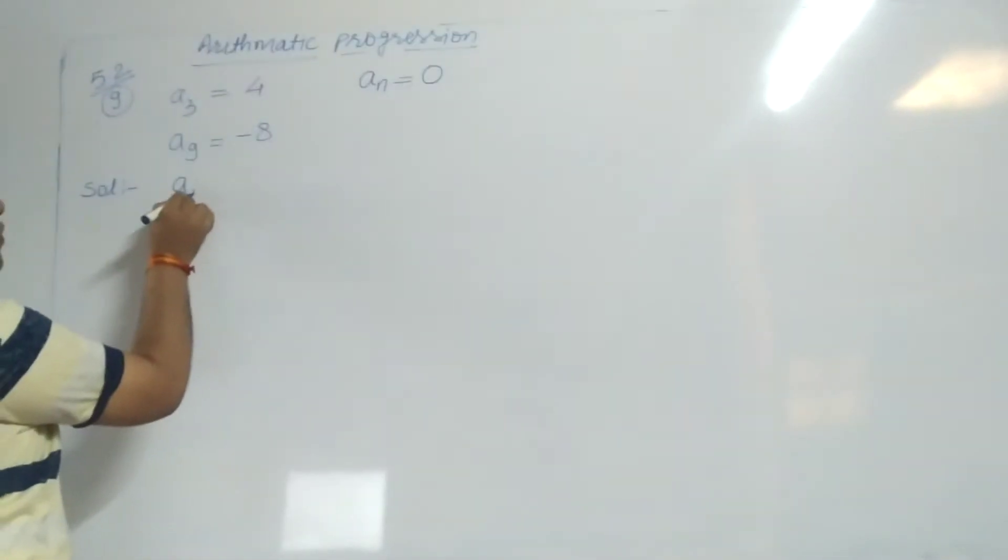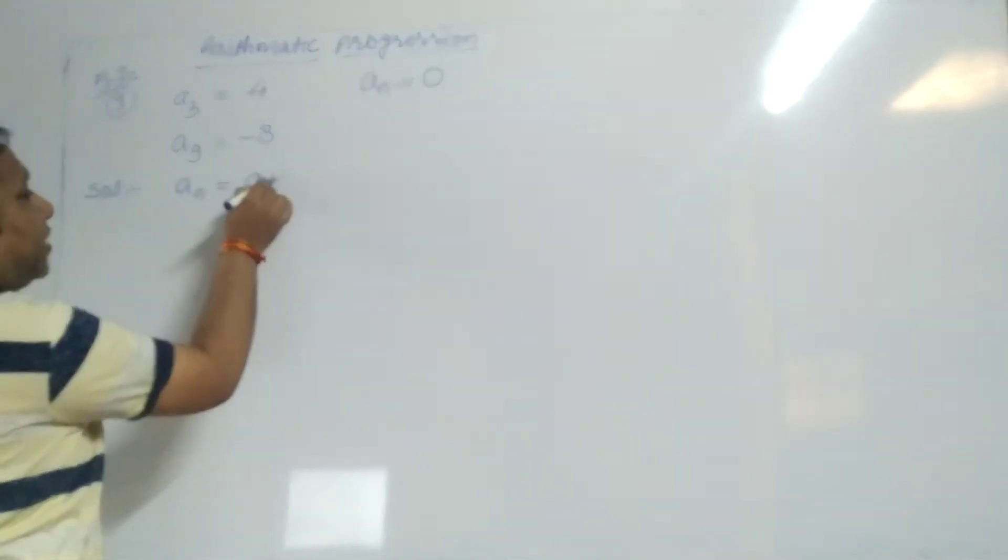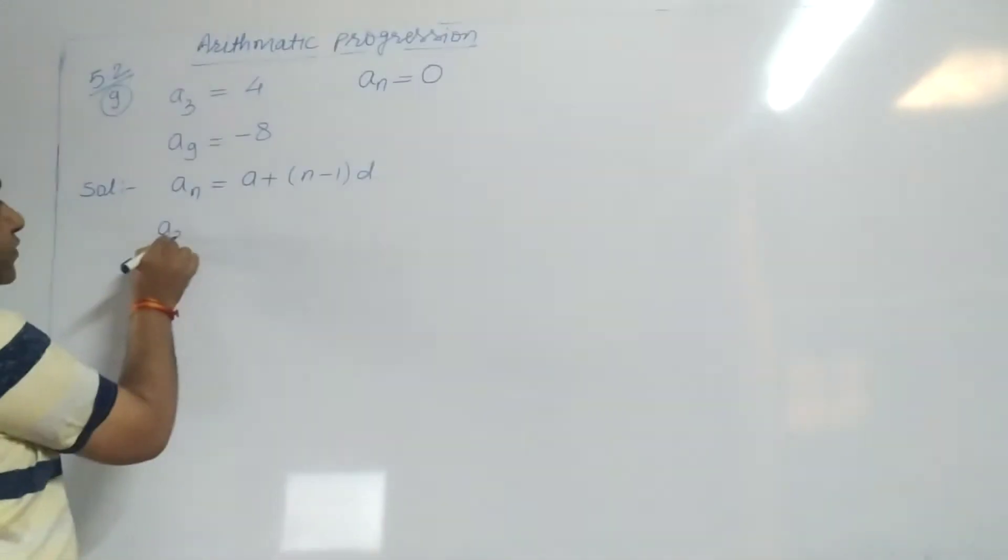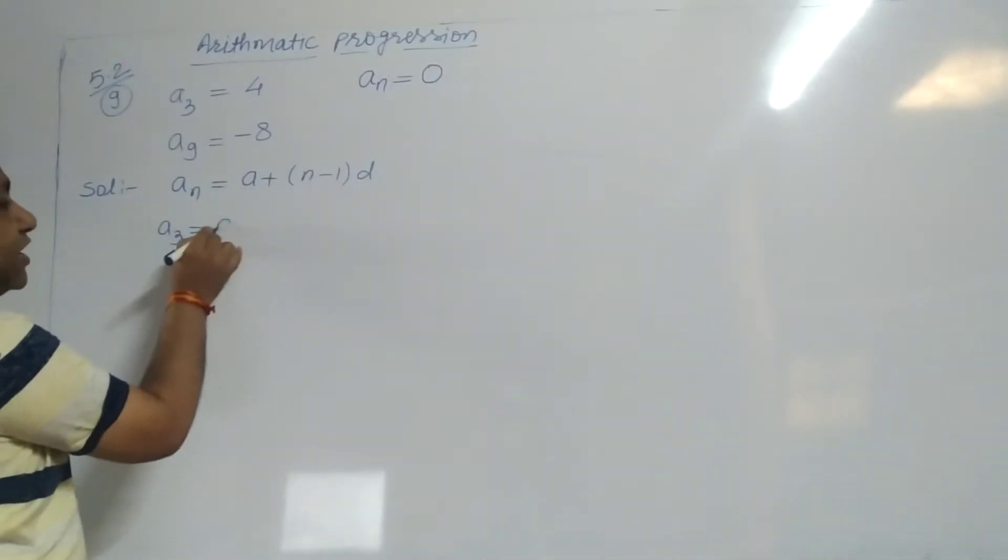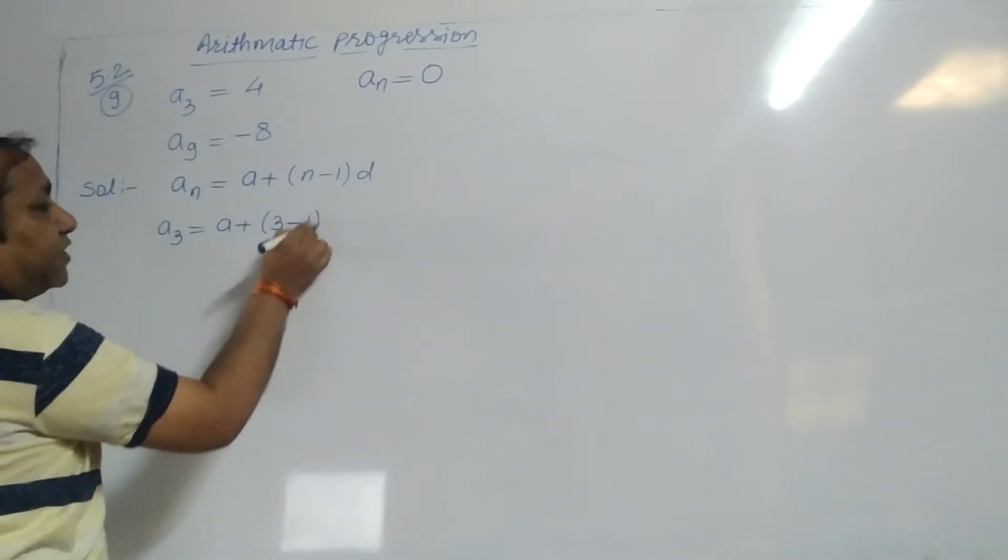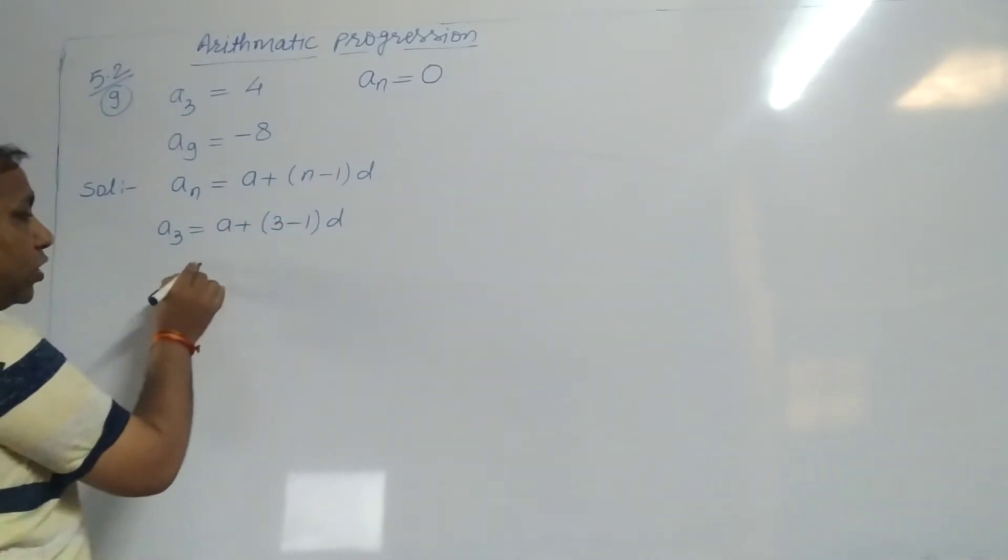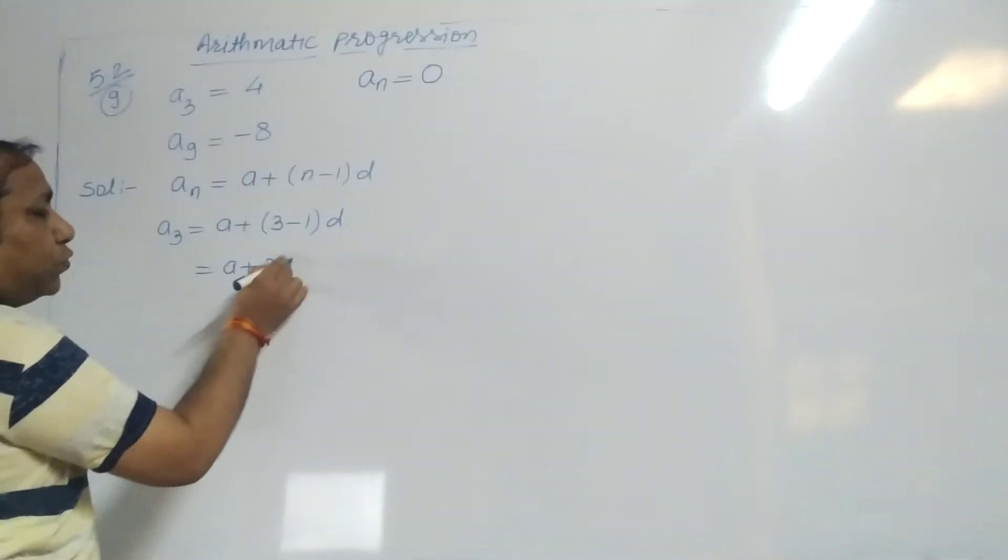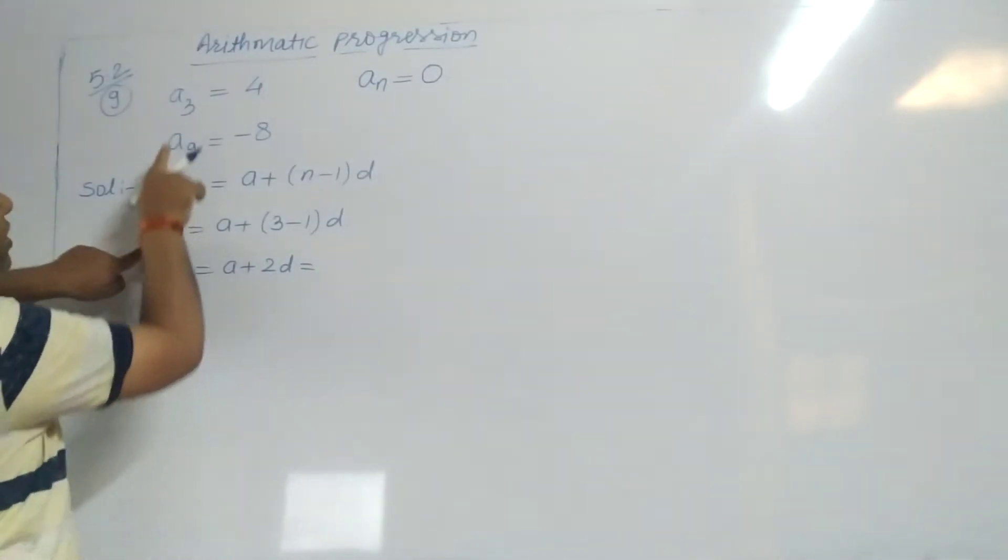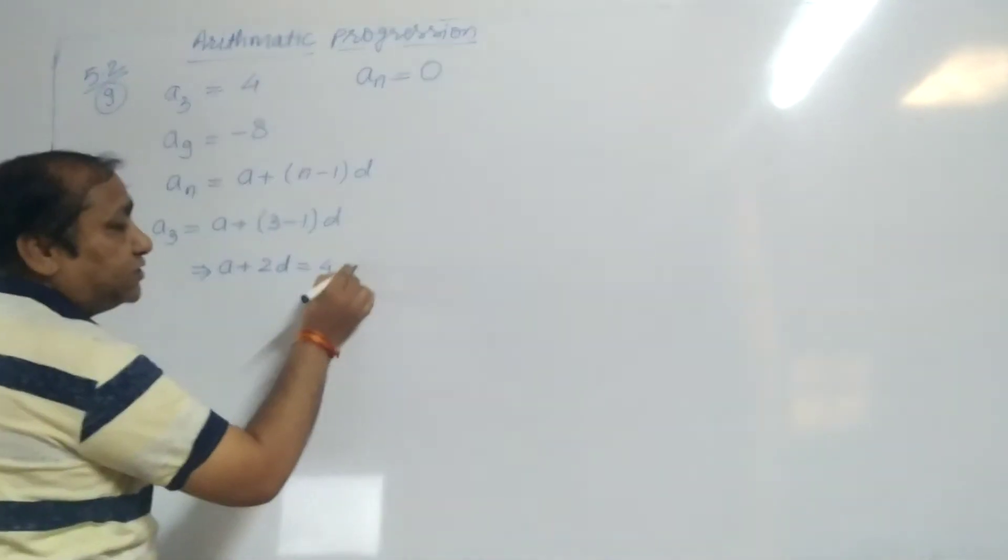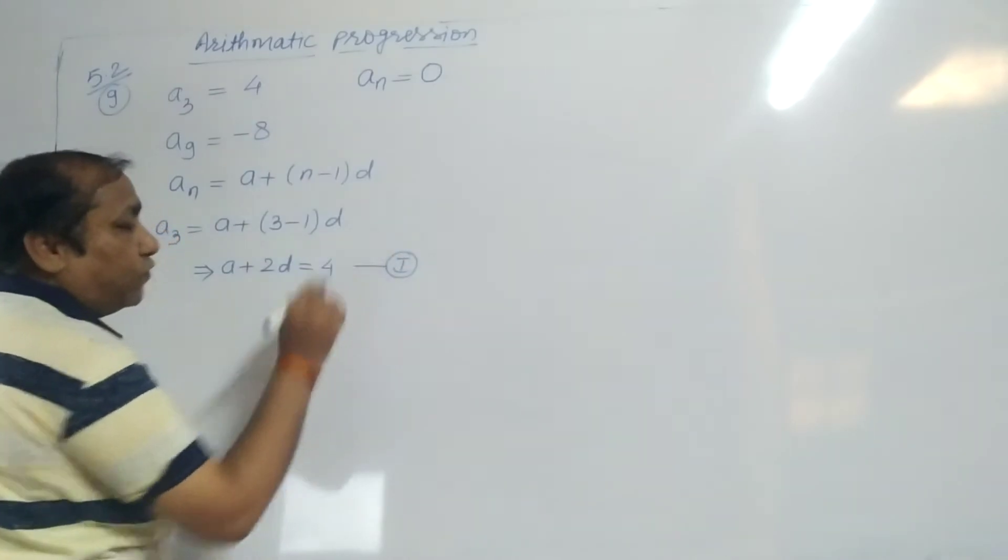We have a formula: AN equals A plus N minus 1 into D. So A3 equals A plus 3 minus 1 into D. A plus 2D equals A3 value, which is 4. This is your equation number 1.